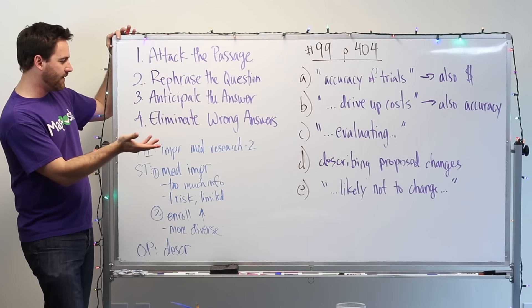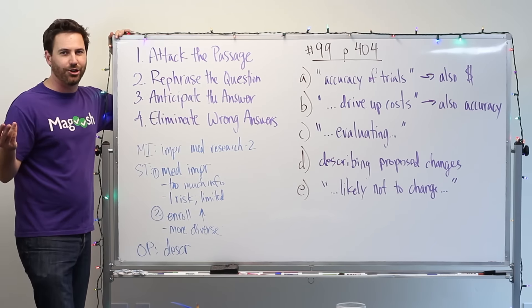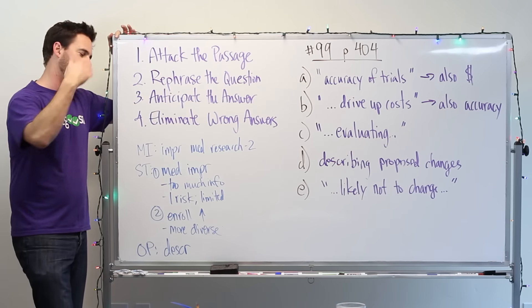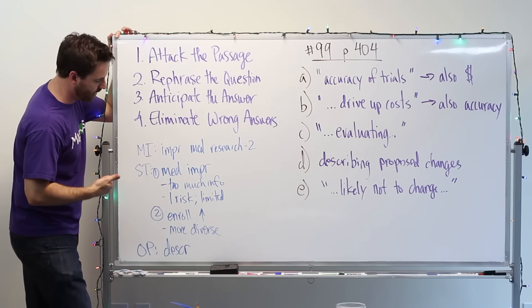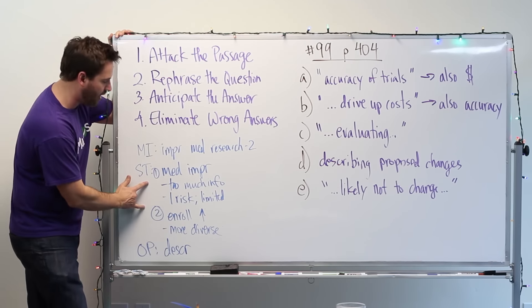So in this passage, the main idea is about improving medical research. They mentioned sort of two ways. There's two paragraphs, there's two ways. There's two guys that are writing about this. Their names are not important. The general structure, so two paragraphs. The first paragraph introduces the main idea that medical research needs to be improved.